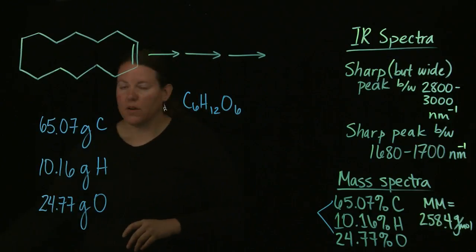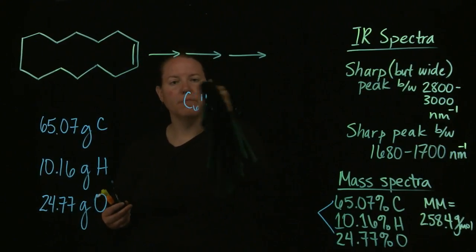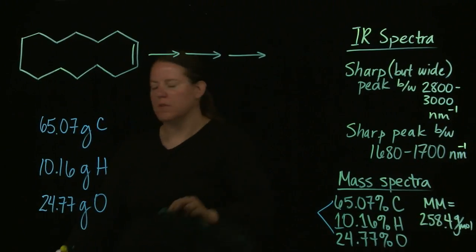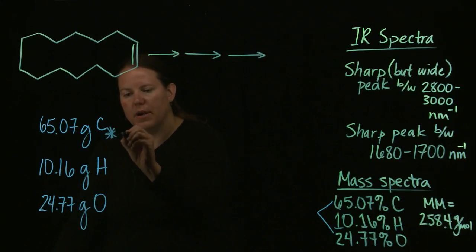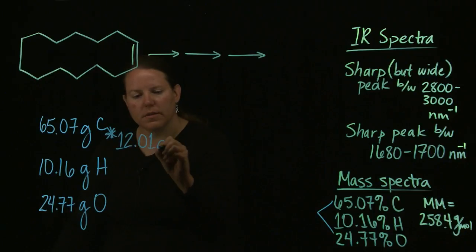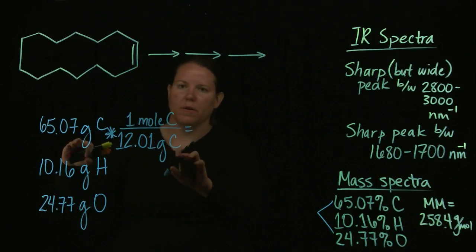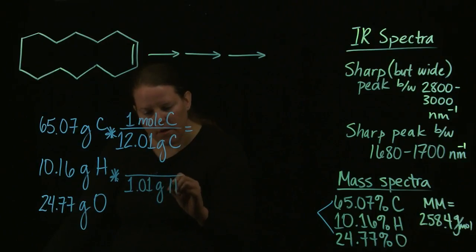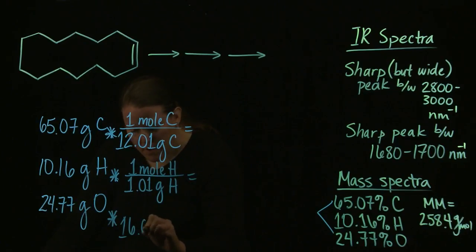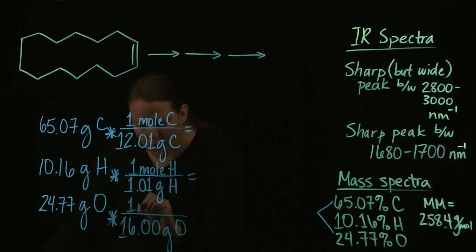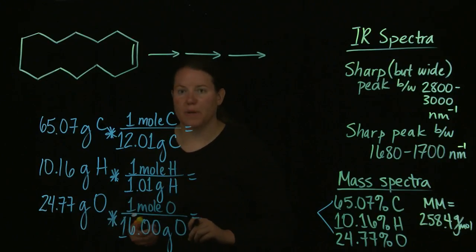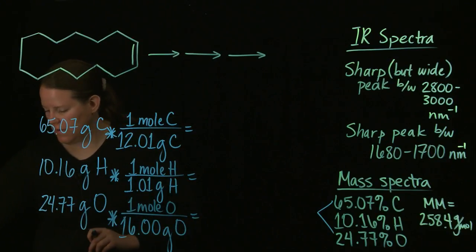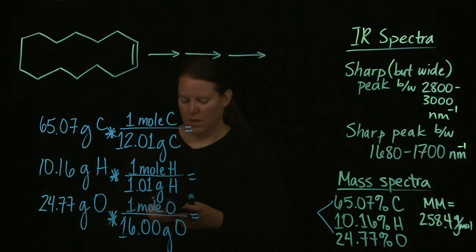Because of that, I'm going to go ahead and find moles, which is pretty easy considering I'm given grams. The way I go from grams to moles is with the molar mass. You would look it up on the periodic table. I'm putting the number I find underneath the letters on the periodic table on the bottom so that my grams of carbon and grams of carbon can cancel out.